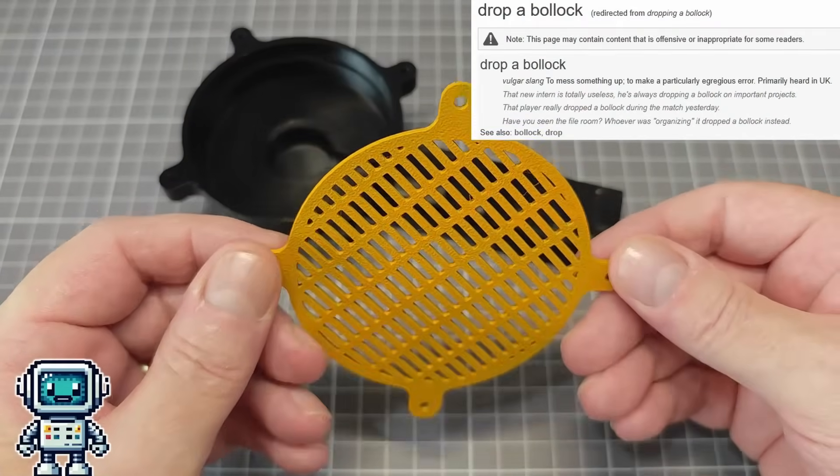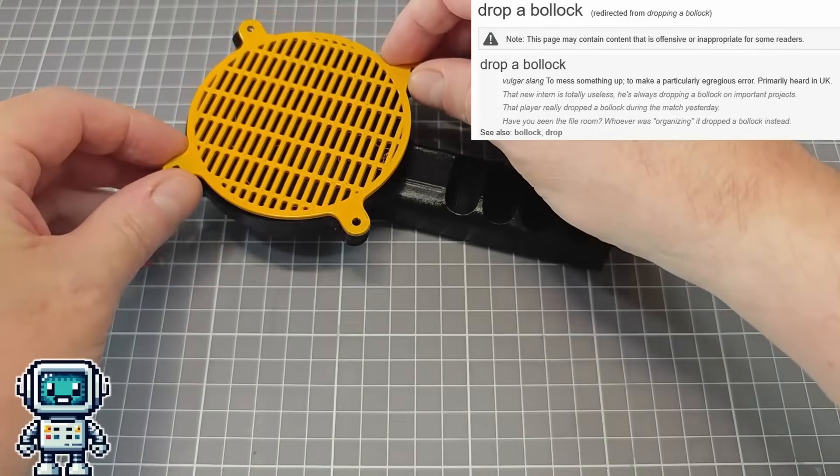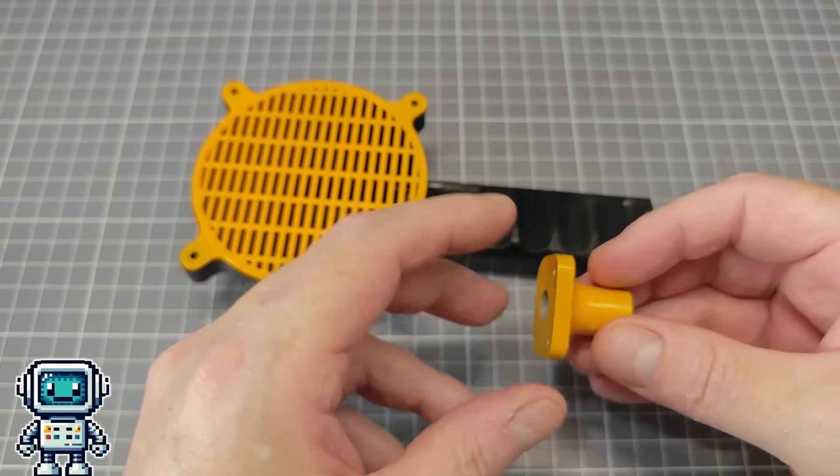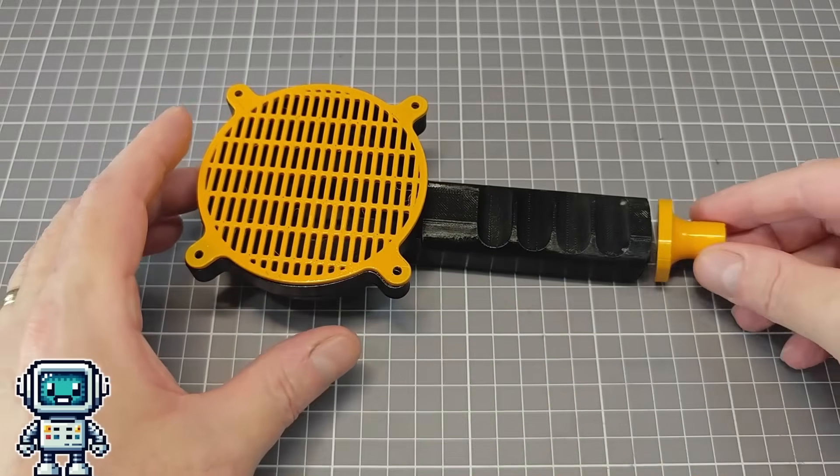We painted the parts in some snazzy colors, it doesn't really match the Geiger counter, but these were the colors we have left over from some other projects, so this is what we are going to run with.